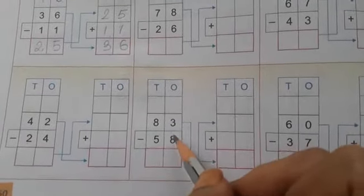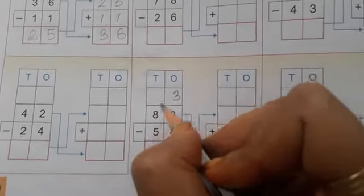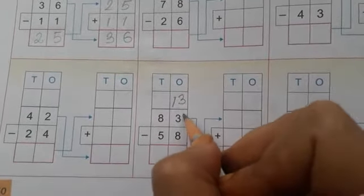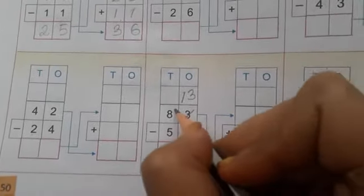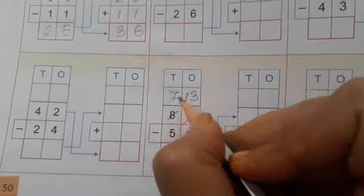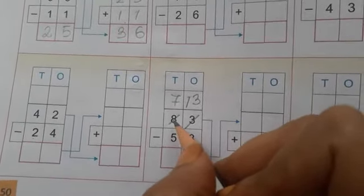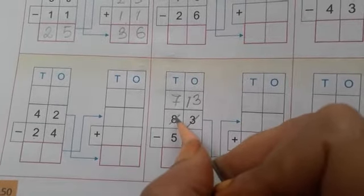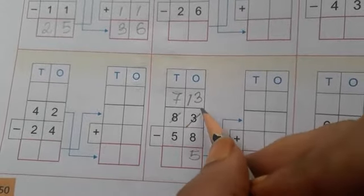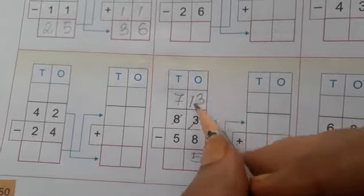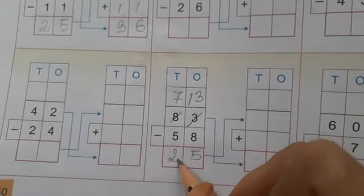Here we can't subtract 8 from 3, so we carry 1 from the tens, making it 13. 13 minus 8 is 5. Then in the tens place, 7 minus 1 carried is 6, and 6 minus 5 is 1 — wait, 7 minus 5 is 2, giving the answer 25.